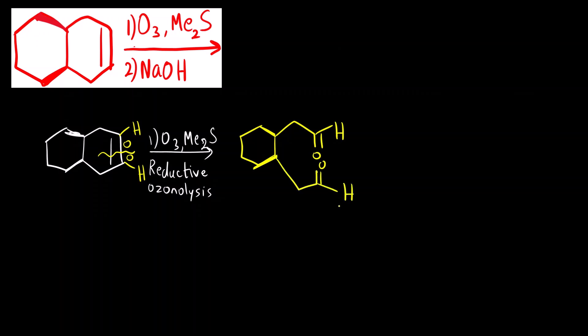C double bond O H, C double bond O H. Now, why this is called reductive ozonolysis? Because the reaction stops at the aldehyde stage. Now, instead of dimethyl sulfide, if I use something like H2O2 which is hydrogen peroxide which is an oxidizing agent.